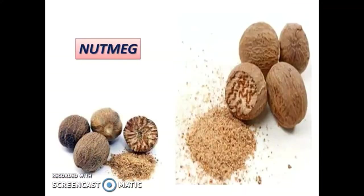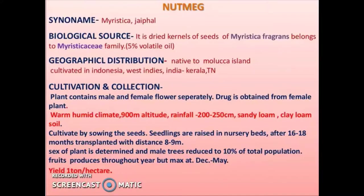Next is Nutmeg. Synonym: myristica or xyphal. Biological source: it is the dried kernels of seeds of Myristica fragrans, belonging to the family Myristicaceae. It contains 5% volatile oil. Geographical source: native to Molucca islands, cultivated in Indonesia, West Indies, and India in Kerala and Tamil Nadu.